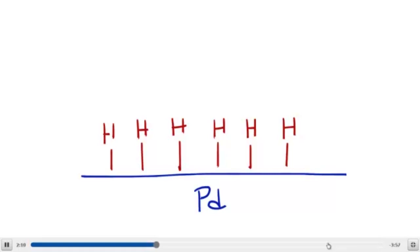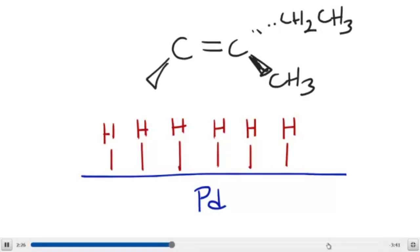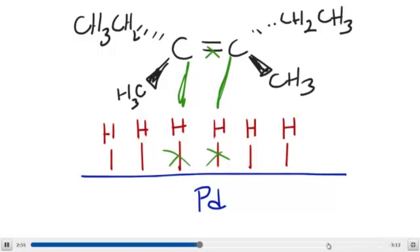Here is the alkene we had on the previous slide. I'm going to draw it in the exact same orientation we had a moment ago. What literally is going to happen at this moment in time is this double bond is going to break and it will pick up a hydrogen from the same side as this bond here breaks. These bonds here are going to break as well.